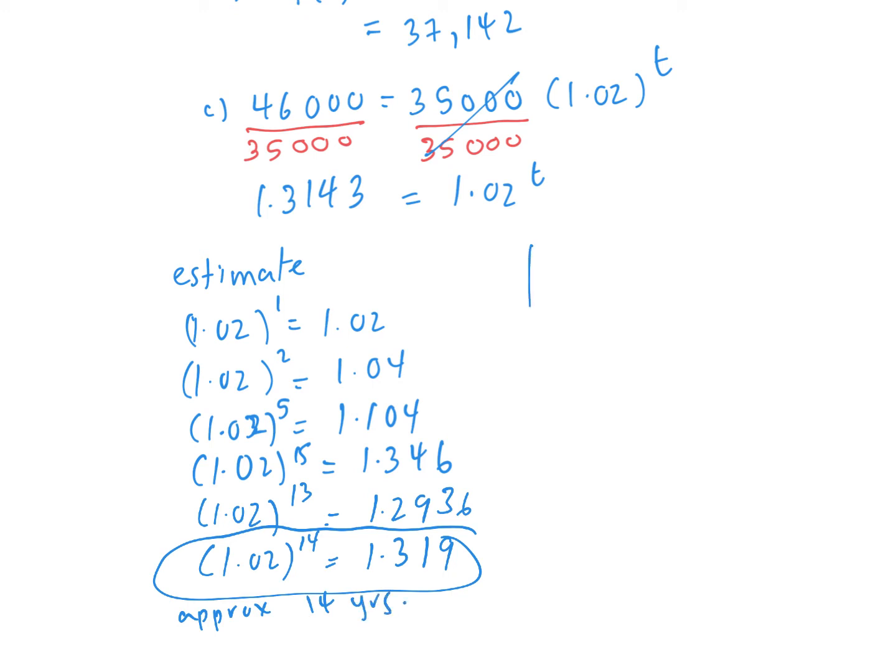That's an estimate using trial and error—taking the base, trying different exponents until you end up with the target number. The other way is to use logarithms. Logarithms are the inverse of exponential functions. Remember inverse functions: a square and square root are inverse operations. If I want to undo a square, I can square root. It's the same with logs.